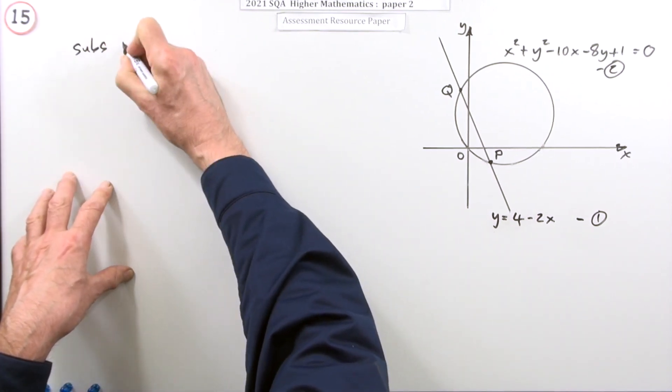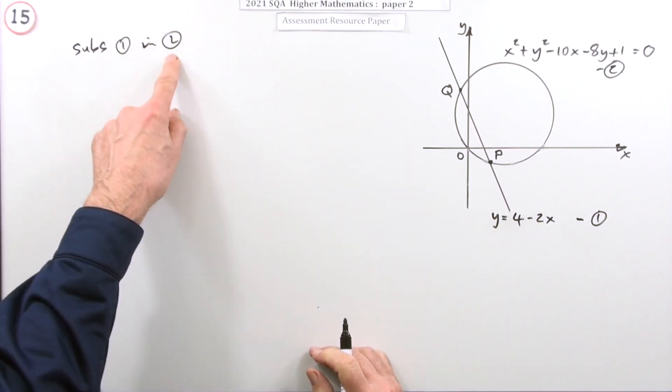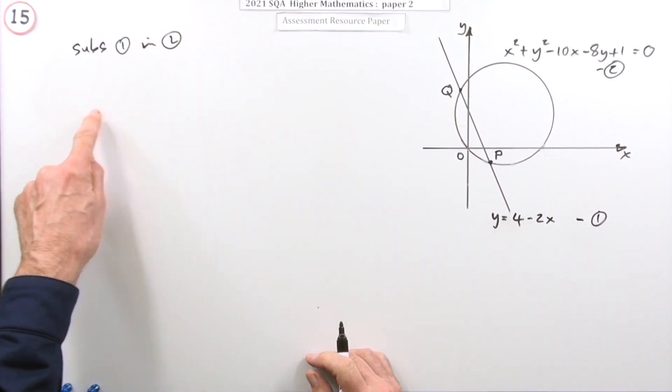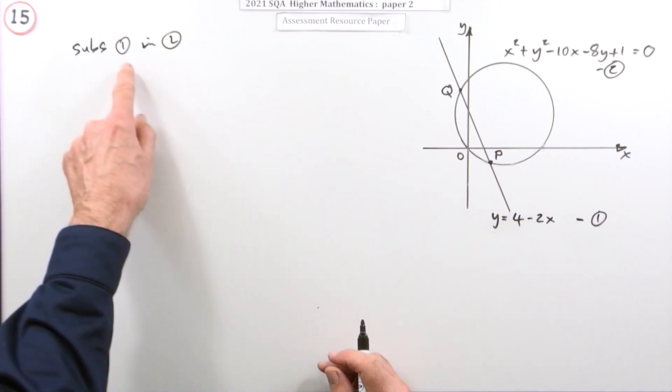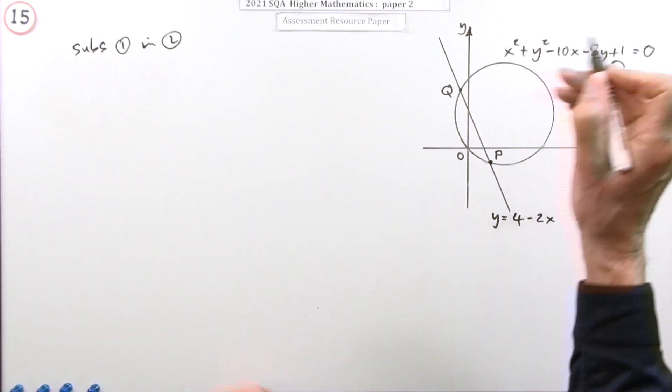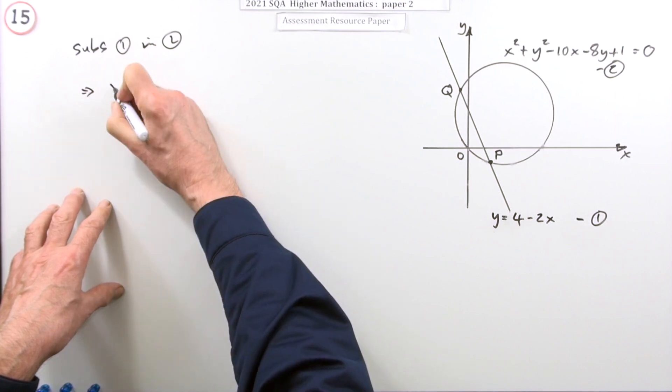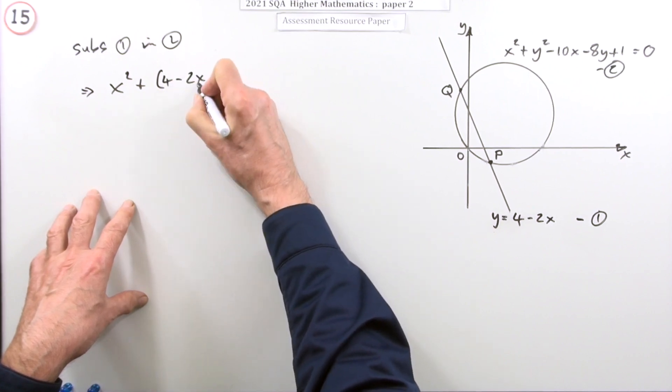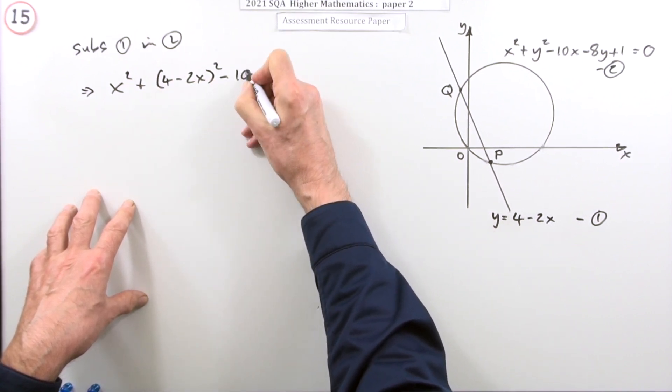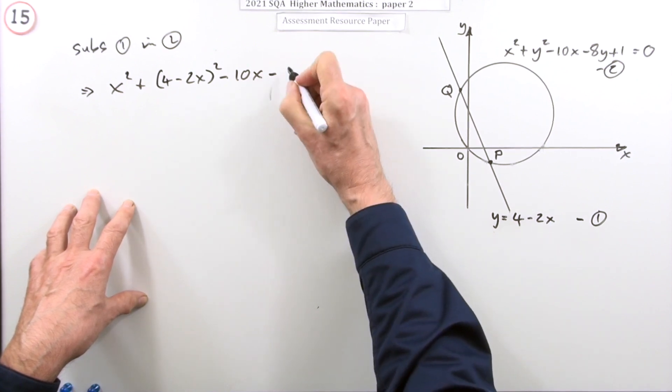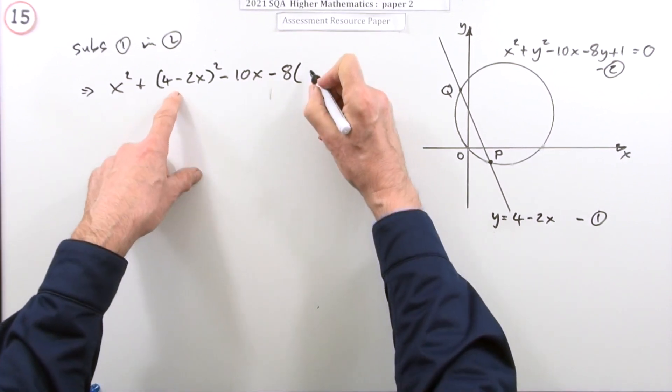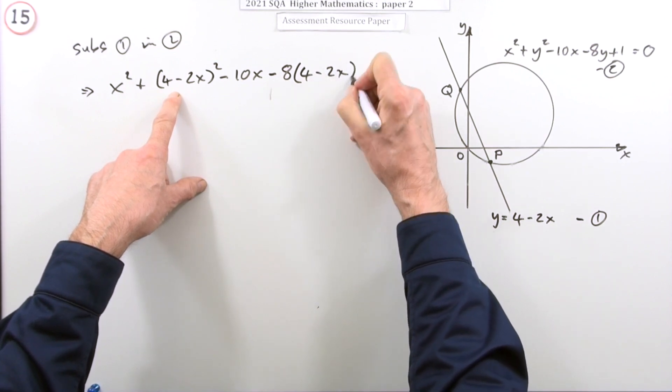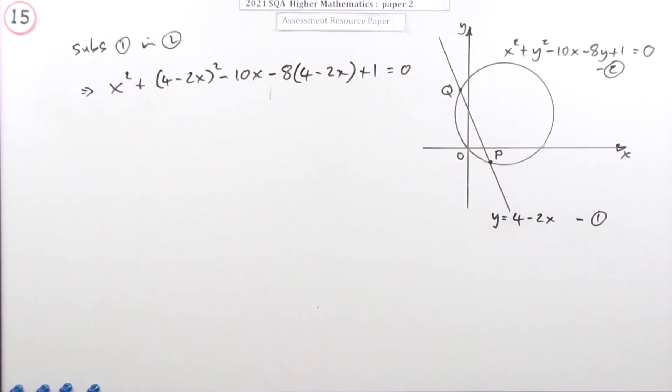So substitute one into two, that's the way I set it out. Meaning I write out equation two and wherever I spot y within that, I use this substitution to replace it. So I write down equation two. x squared plus, oh here's a y, don't put it down, put this instead: 4 minus 2x squared minus 10x. Not minus, not plus. 8y again, 4 minus 2x, and then plus 1 equals 0. Now doing that, carrying out the substitution gives you the first mark.